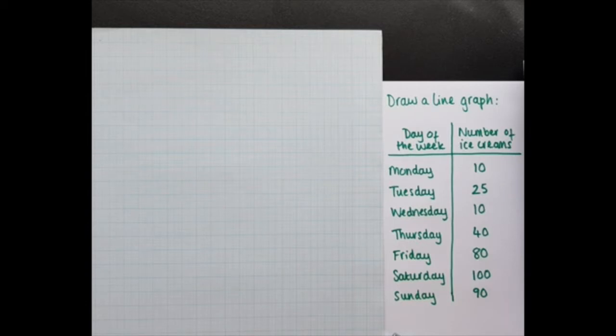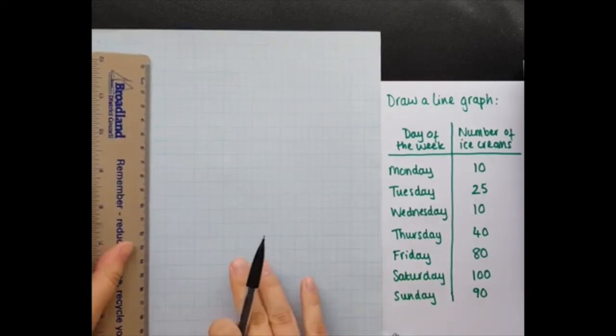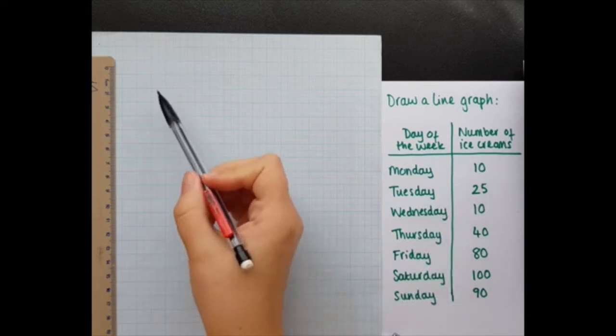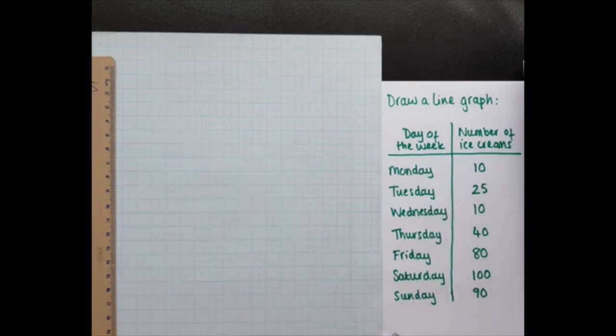Now, as usual, we start off with our two axes and we need to think about the scales for those. So I'm going to use a ruler and I'm going to use a pencil because you always use a pencil and ruler when drawing graphs. And I'm going to see what my maximum number of ice creams is because that's the height I want my y-axis to be. So my maximum number of ice creams is 100, so I'm going to have a scale that goes up to 100.